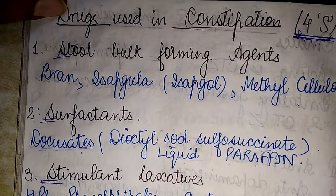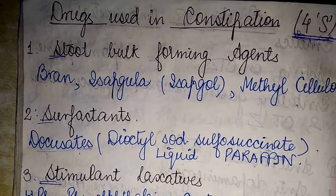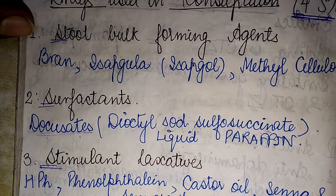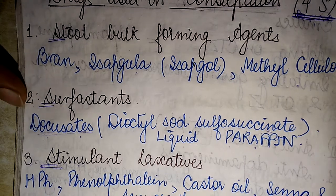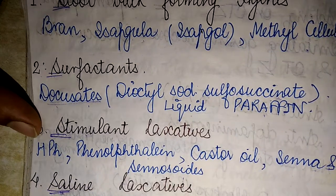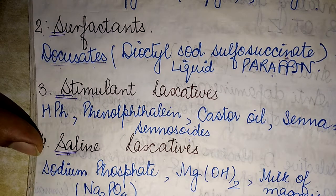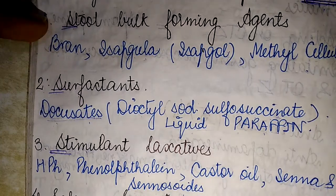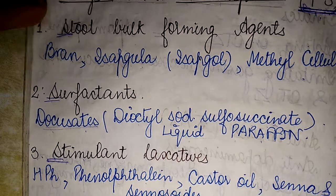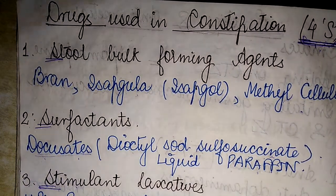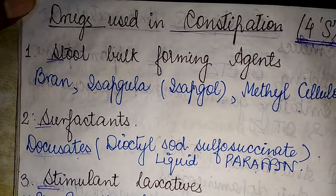To quickly summarize: the drugs used in the treatment of constipation comprise the 4S — the first S being stool bulk forming agents, the second S the surfactants, the third S the stimulant laxatives, and the fourth S the saline laxatives. This is a short, classic way of memorizing the classification.